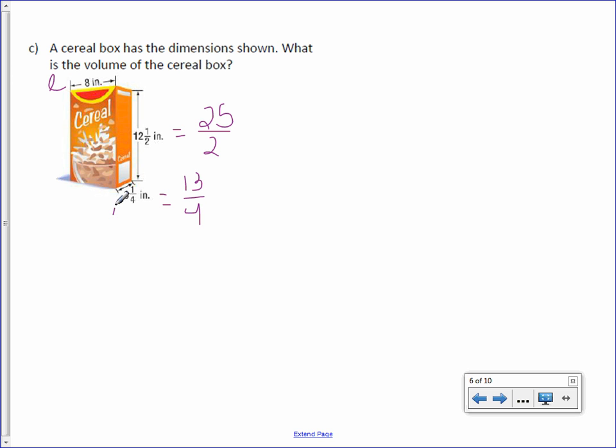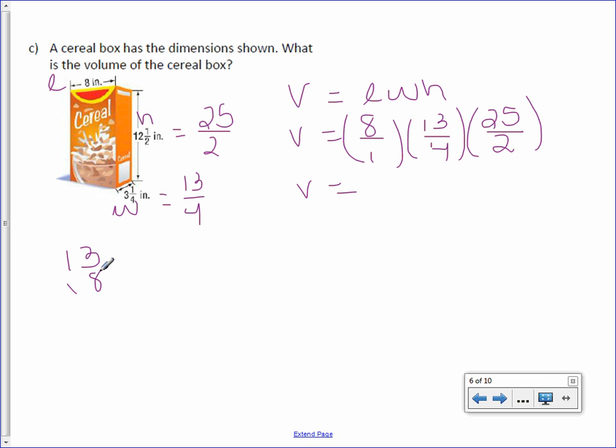This would be our length, width, and height. Volume equals length, width, height. Volume equals—since I'm dealing with fractions, I'm going to put that 8 over 1, the width 13 over 4, and the height 25 over 2. Volume equals—okay, let's multiply these three fractions. 8 × 13 is first: 8 × 3 is 24, 8 × 1 is 8, plus 2 is 10, so that's 104. But then I have to multiply it by 25.